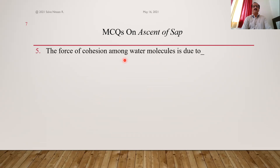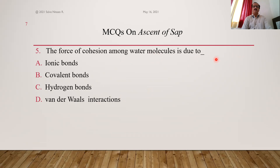Question 5: The force of cohesion — the attraction between similar molecules, among water molecules — is due to what type of bonding? The force of cohesion among water molecules is due to hydrogen bonding. Hydrogen bonds are not individually strong, but when their number increases, as in water, they become very strong. The force of cohesion due to hydrogen bonding is about 350 atm. So hydrogen bonding is the right answer; option C.